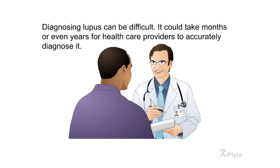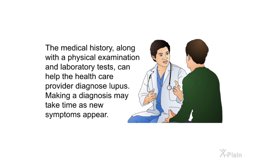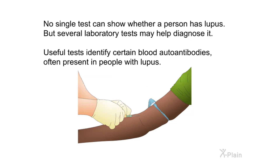Diagnosing lupus can be difficult — it could take months or even years for healthcare providers to accurately diagnose it. It is important to provide the healthcare provider with a complete and accurate medical history. The medical history, along with a physical examination and laboratory tests, can help diagnose lupus. No single test can show whether a person has lupus, but several laboratory tests may help. Useful tests identify certain blood autoantibodies often present in people with lupus.